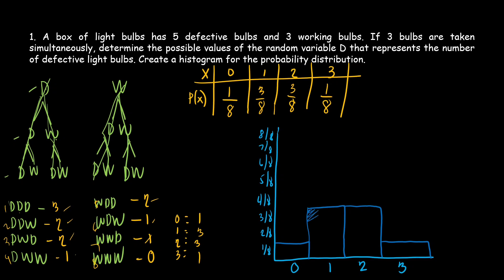And that's it. So first we use the model, then we identify the possible outcomes in our sample space — DDD, DDW, and so on. Then we create a table for x and P of x. And lastly, we draw the histogram.